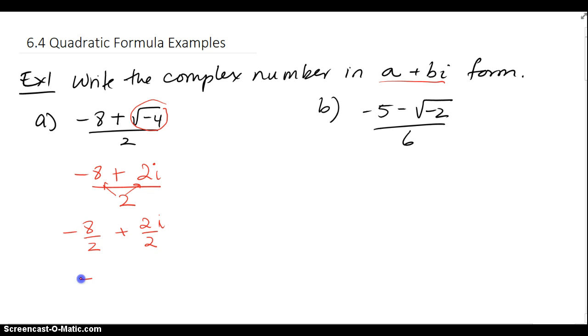Negative 8 over 2 plus 2i over 2, and then we can reduce, so we end up with negative 4 plus, these guys reduce as a 1 over 1, just 1i.